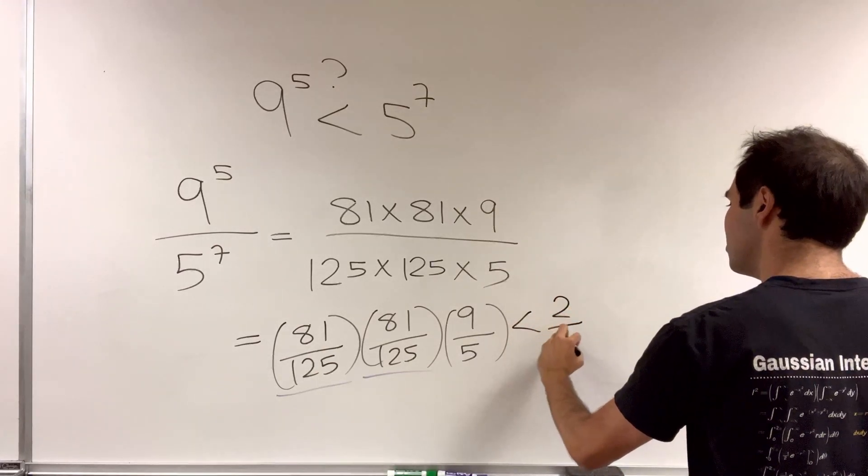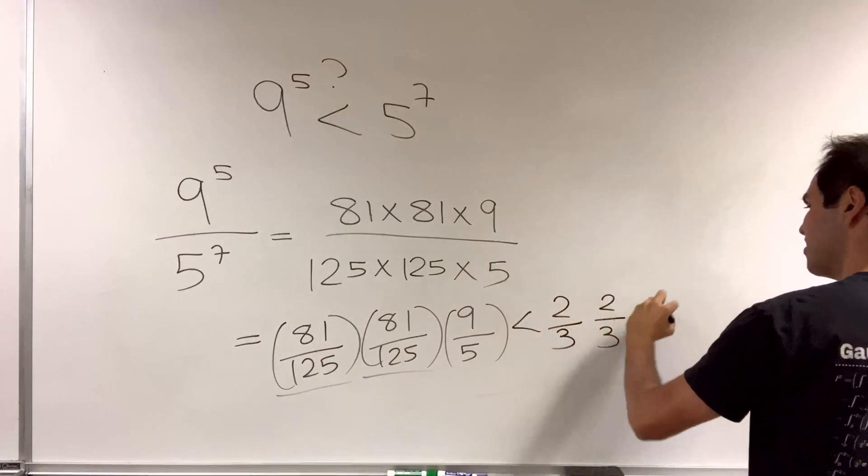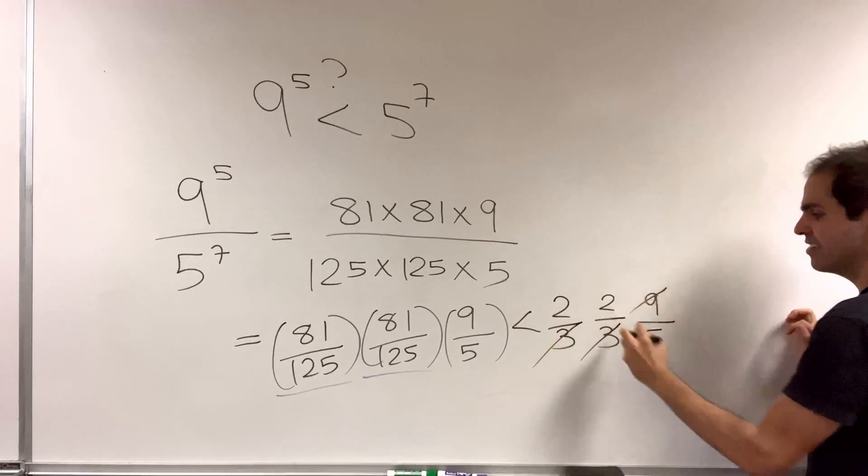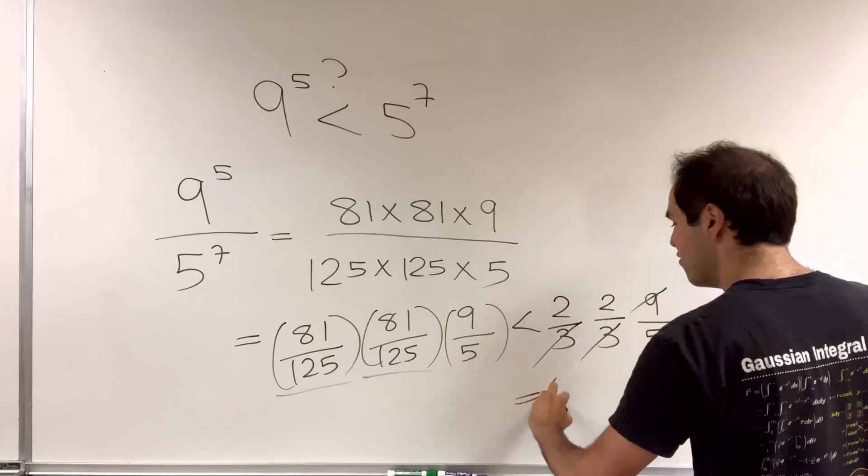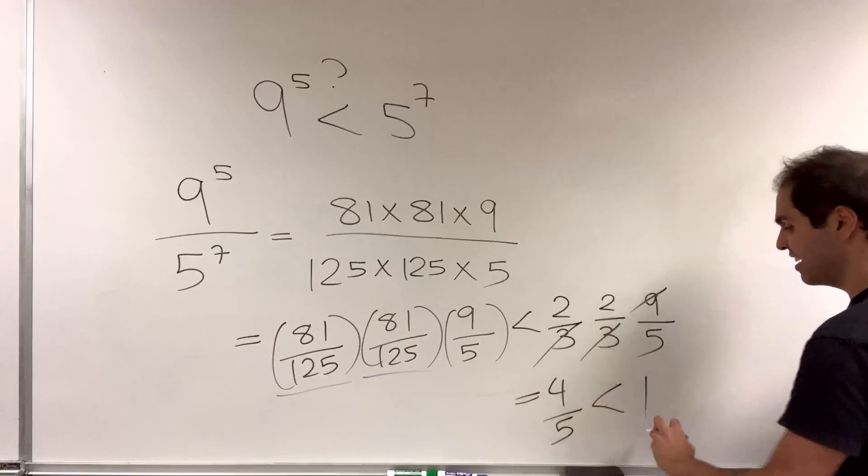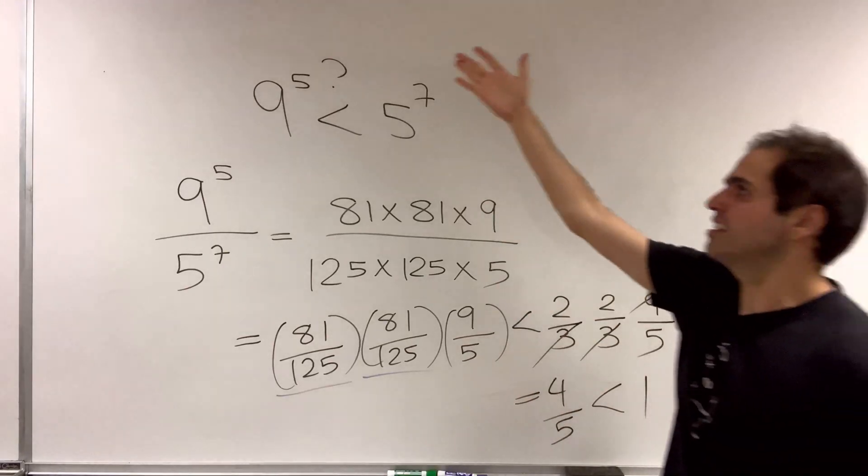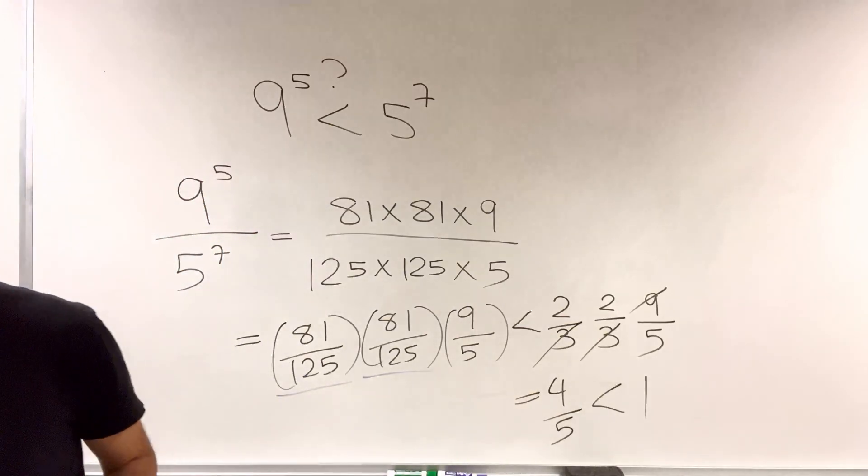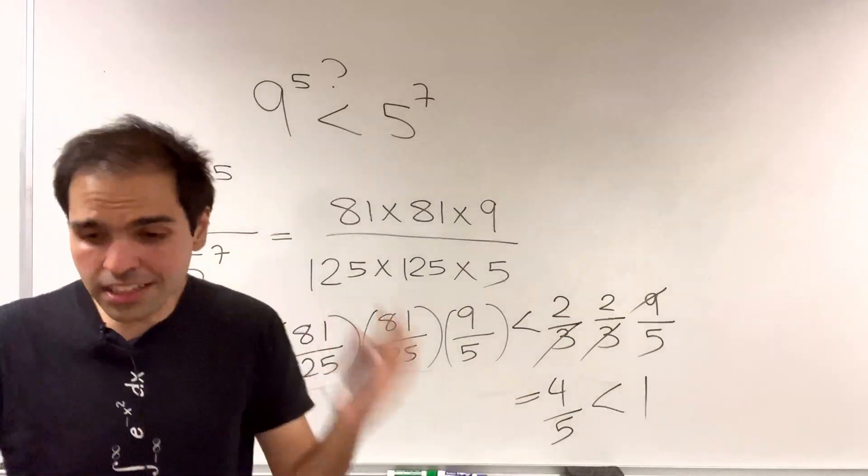So it's less than 2 thirds times 2 thirds times 9 fifths. Now the 9 cancels out with the 3s, and we get 4 fifths. But 4 fifths is less than 1, which tells us that 9 to the 5th is less than 5 to the 7th.